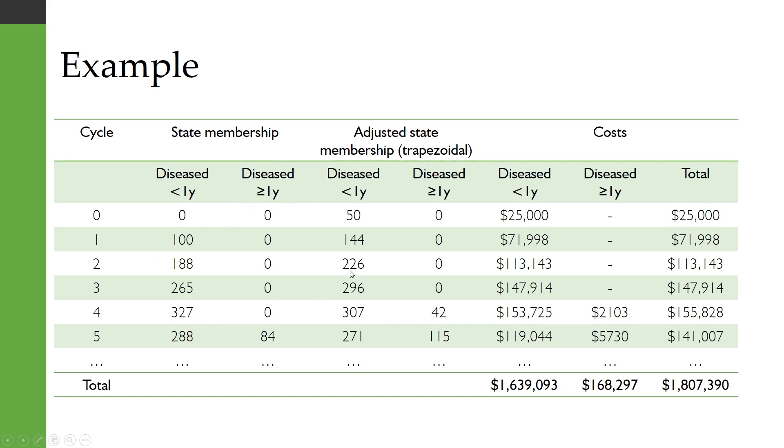Now what we do with the trapezoidal method is exactly what we've been doing all along, is we calculate this adjusted state membership as the average of the current cycle and the next cycle or if you like the membership at the start and the end of a cycle.